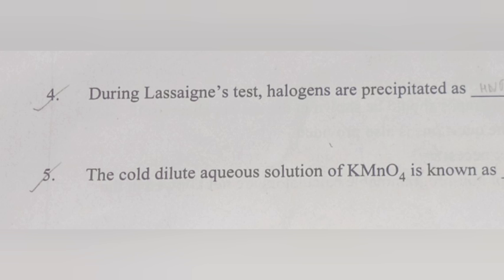Question 4: During Lassaigne's test, halogens are precipitated as dash. Answer: Silver halide.